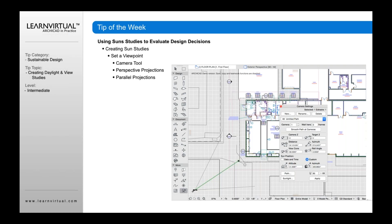One method people use quite often is doing sun studies. Sun studies are created using our camera tool or perspective projections or parallel projections. Typically, people place a camera onto a plan from a viewpoint where they're going to create a sun study projection.